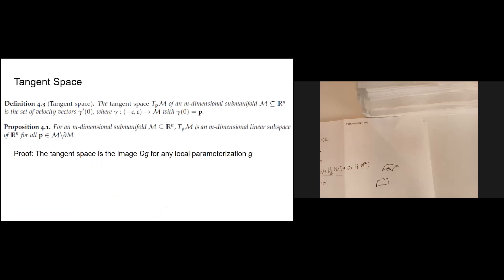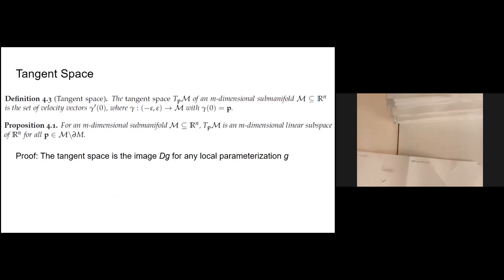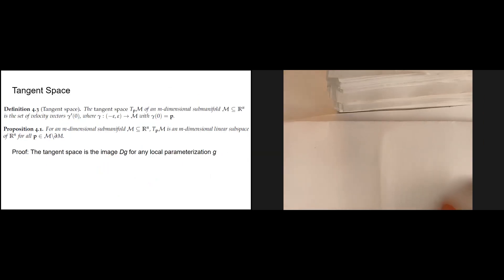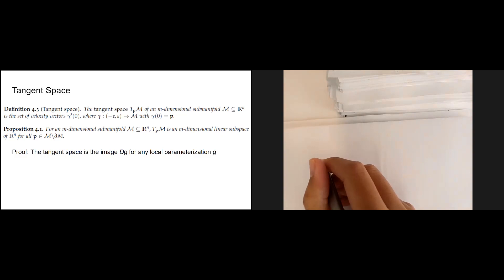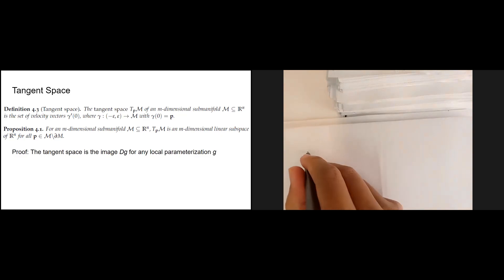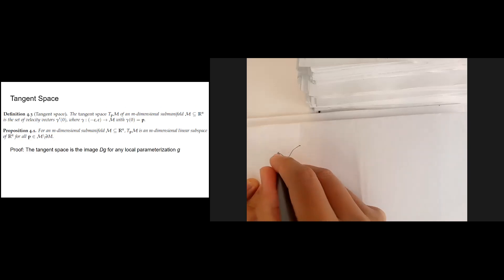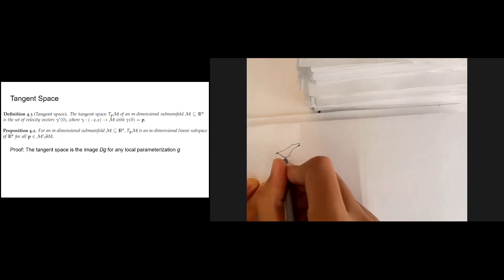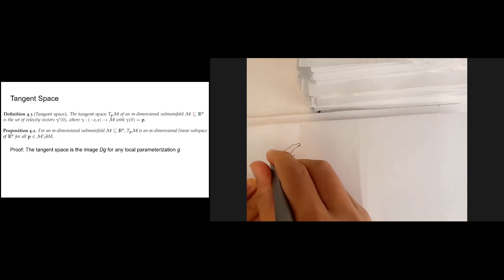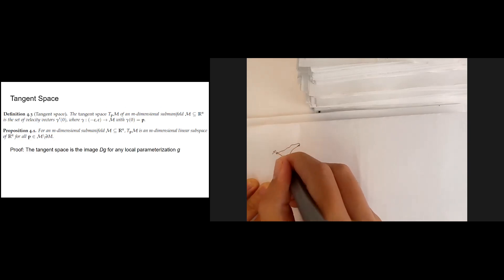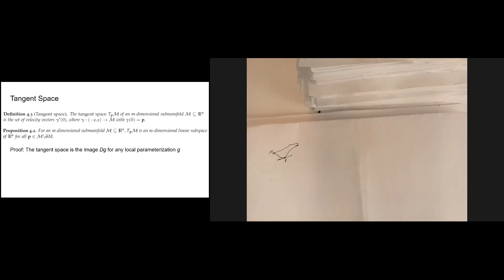Once we understand the definition for surfaces and submanifolds, let's move on to the properties. First, the tangent space. In the 2D surface case, the tangent space becomes a tangent plane. Intuitively, if we draw a surface, the tangent plane is just a plane that touches the surface M at our selected point p. Extending this to higher dimensions gives us the tangent space.